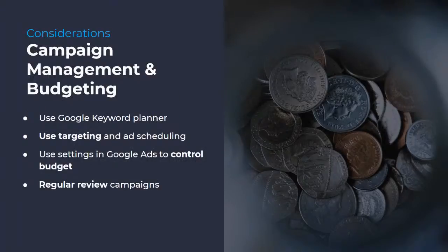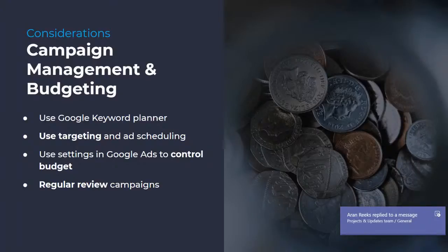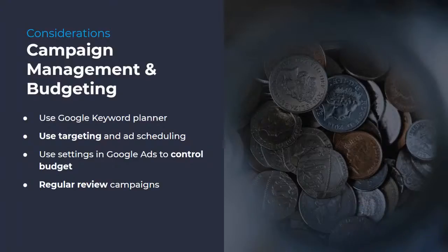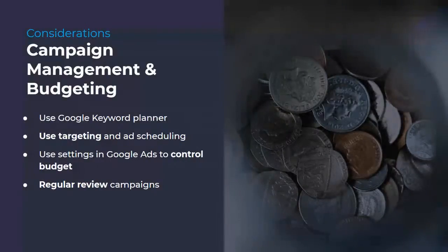A few more things to mention around budget. We would suggest using the Google Keyword Planner to help identify possible volumes and costs for your keywords. We would also suggest using targeting and ad scheduling to help prevent your ads from showing when you don't want them to. And then use the settings within Google Ads to control the budget — things like bid caps and setting daily budgets are a great way to ensure you're not overspending. And regularly review your campaigns and budgets to ensure that you are spending within the budget you've set.